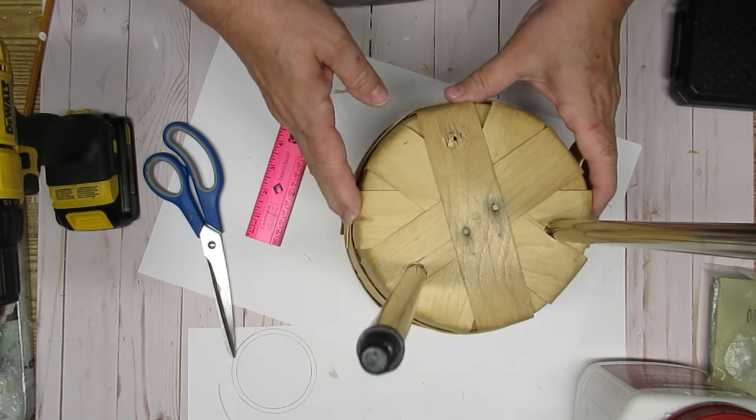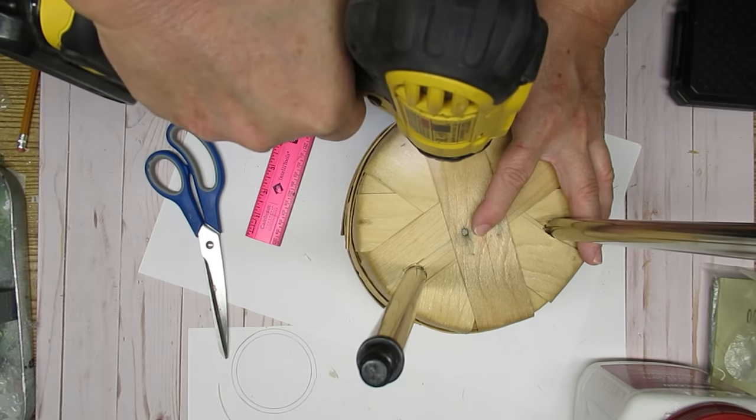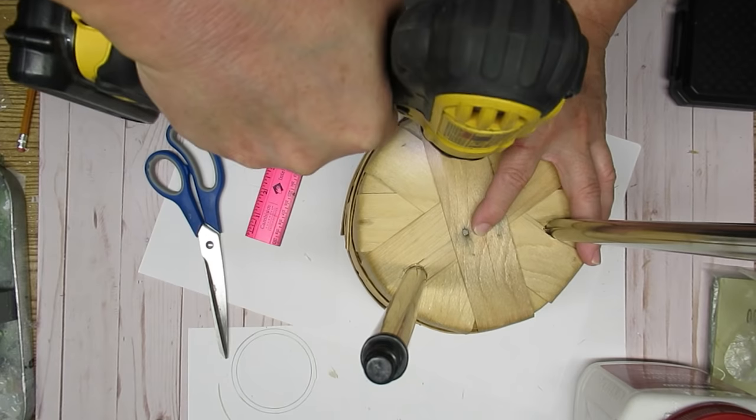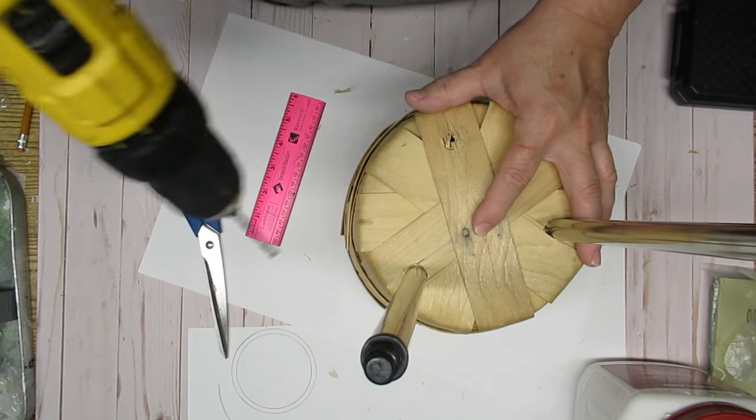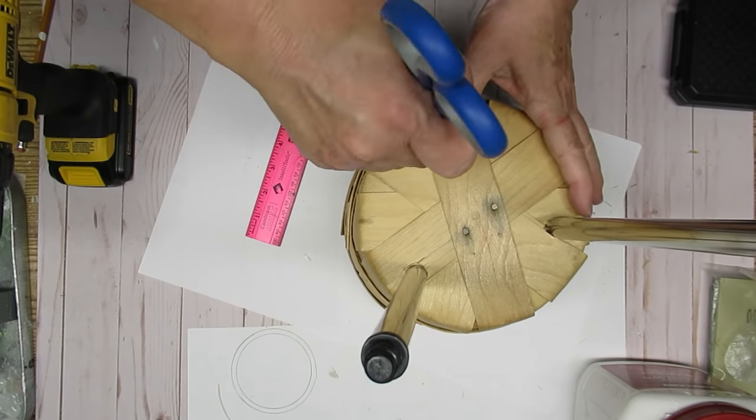My second project is using this little bushel basket that was a thrift store find a while ago, before we were in lockdown, so it was part of my stash. I'm just drilling some holes into it so I can push these steel bars right into it. I'm making a plant stand.